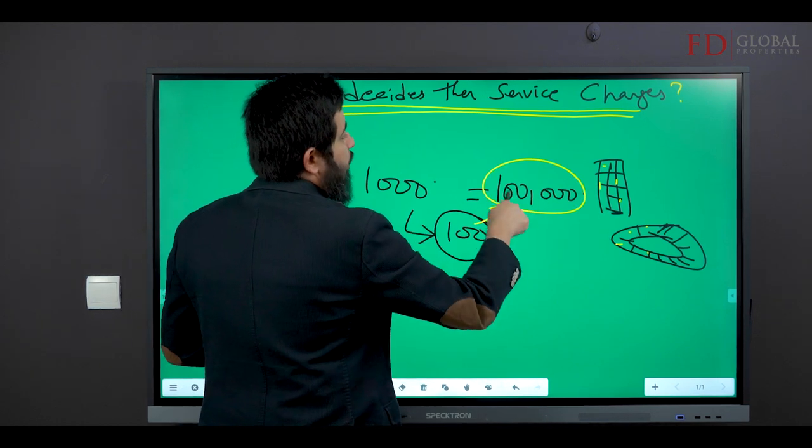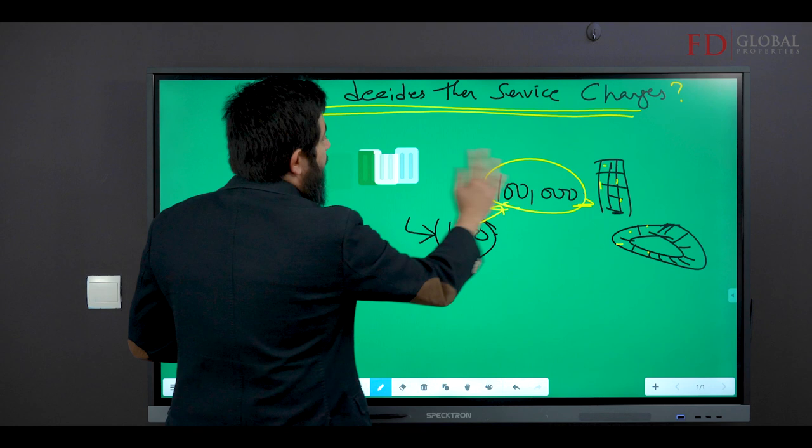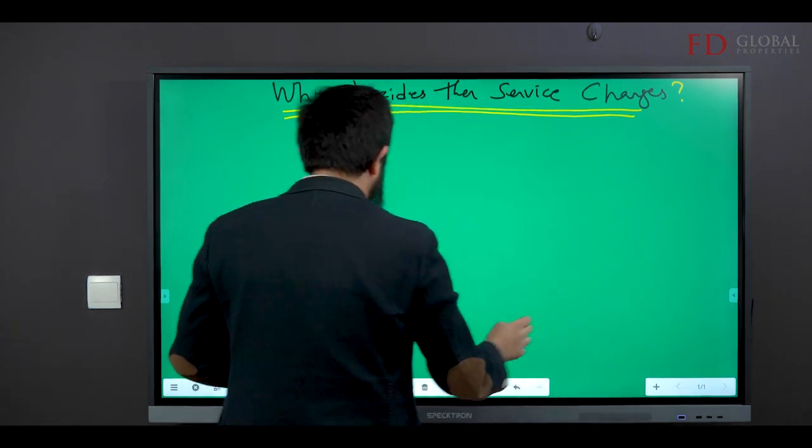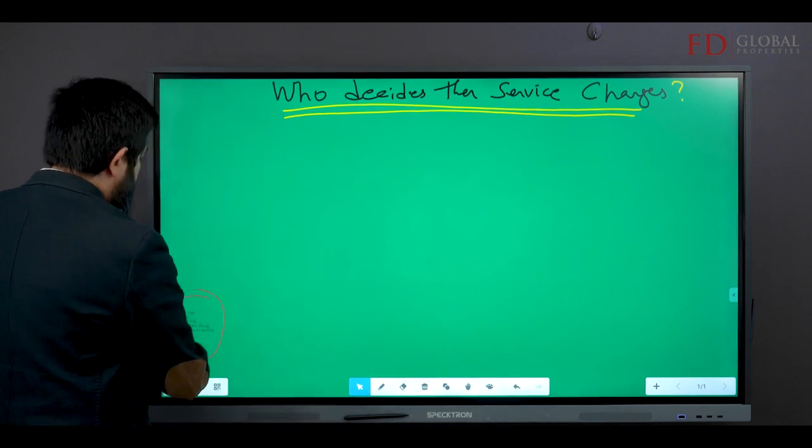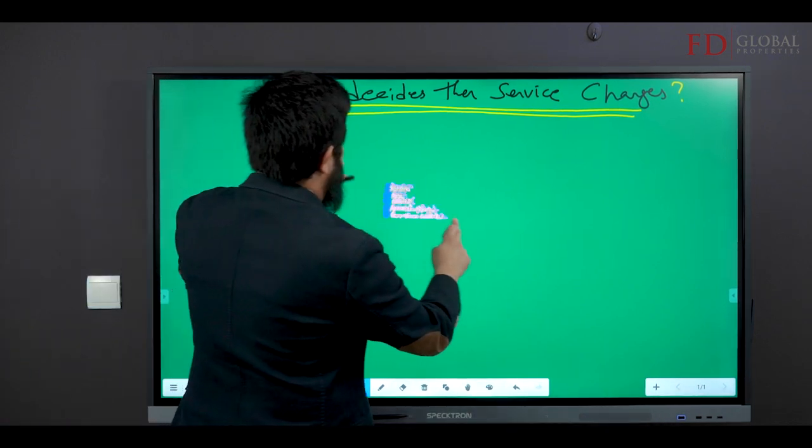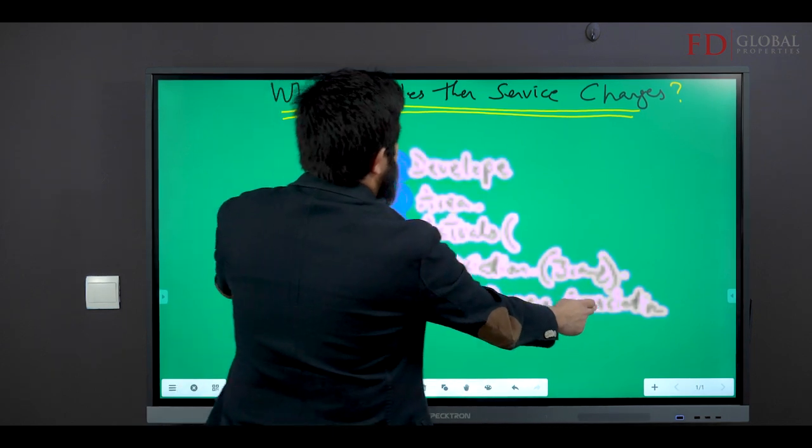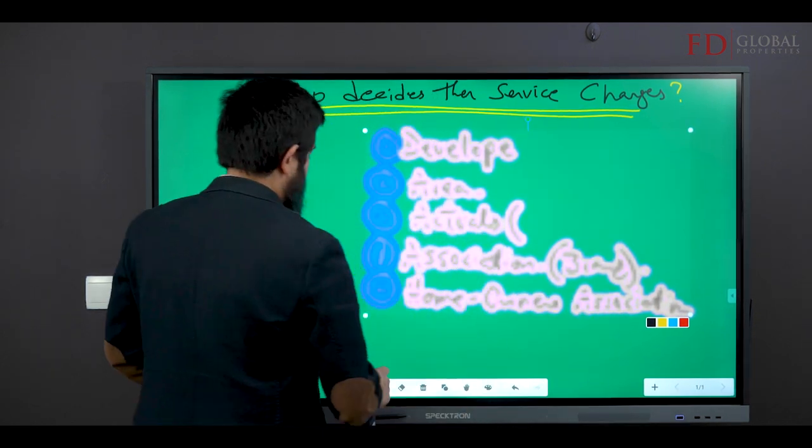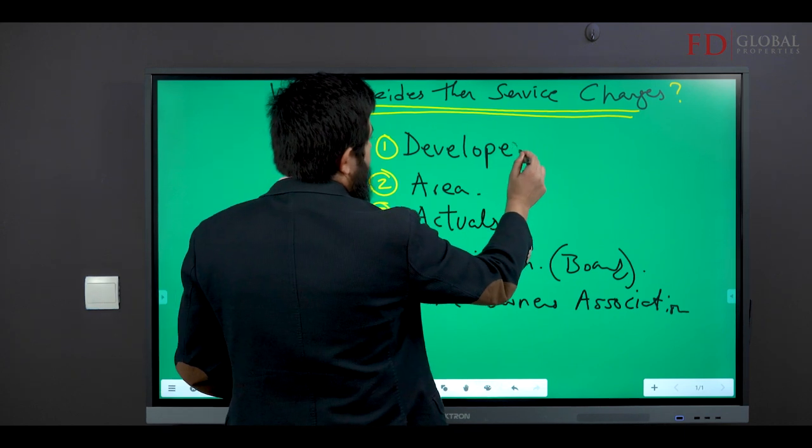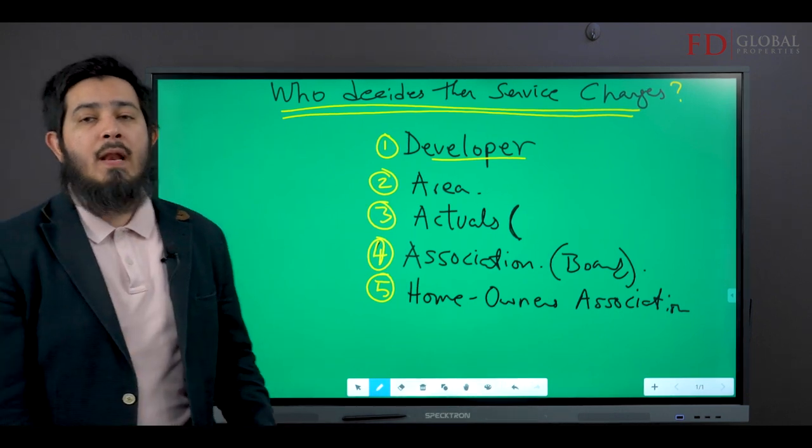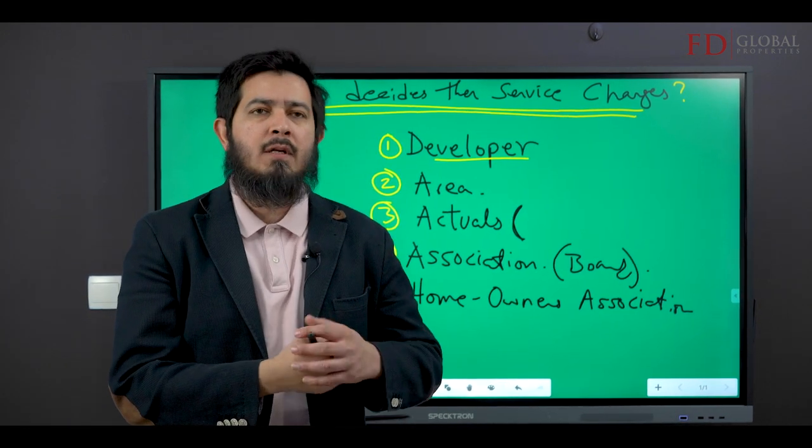How are these service charges decided? Who decides them? Are they random, arbitrary, or is there a science behind them? First of all, the service charges are generally guided by the developer.